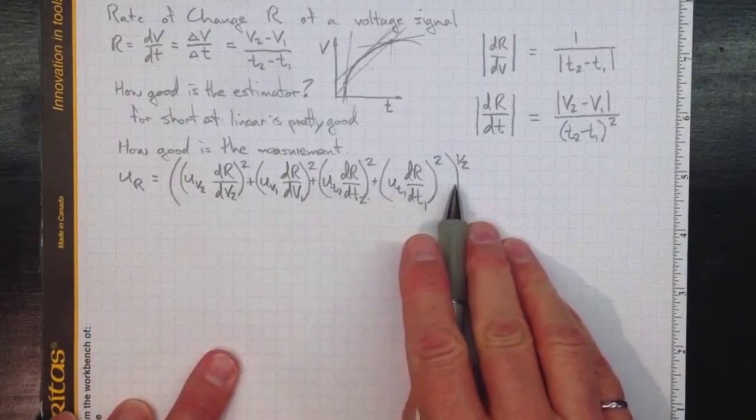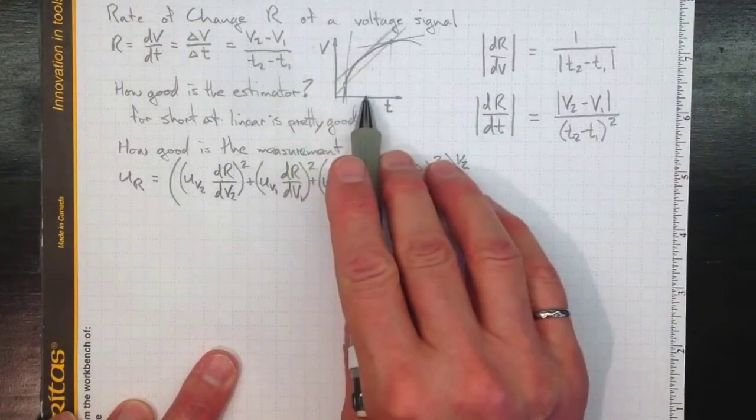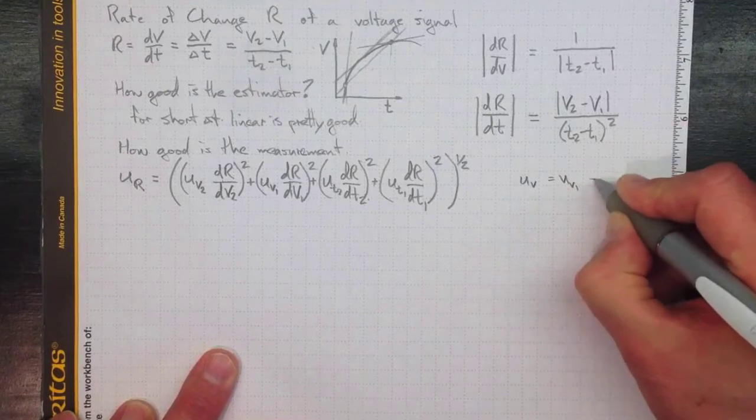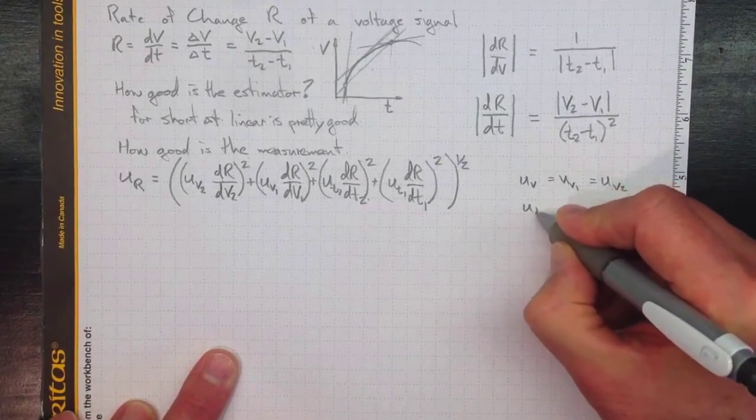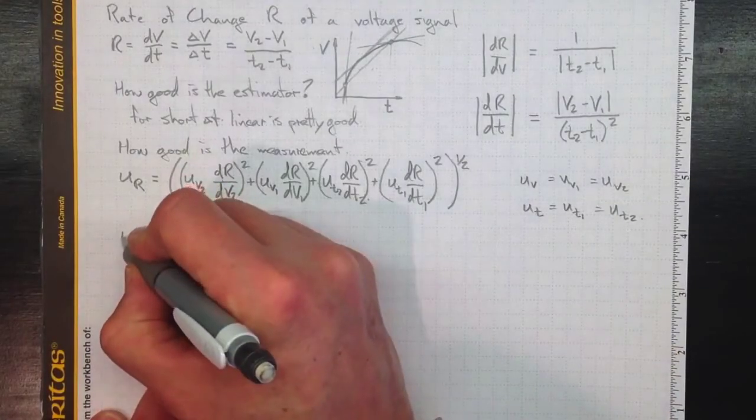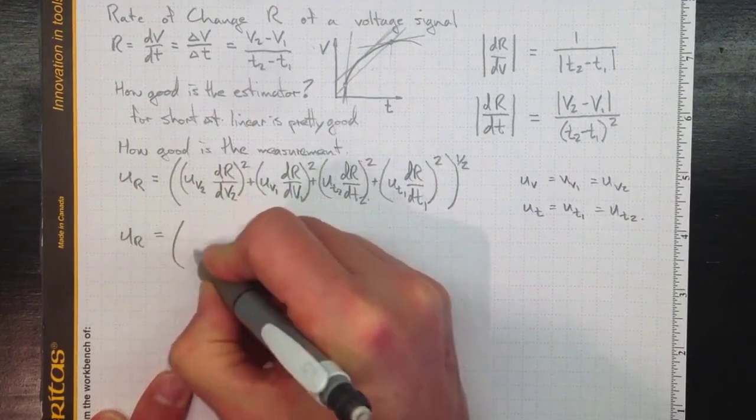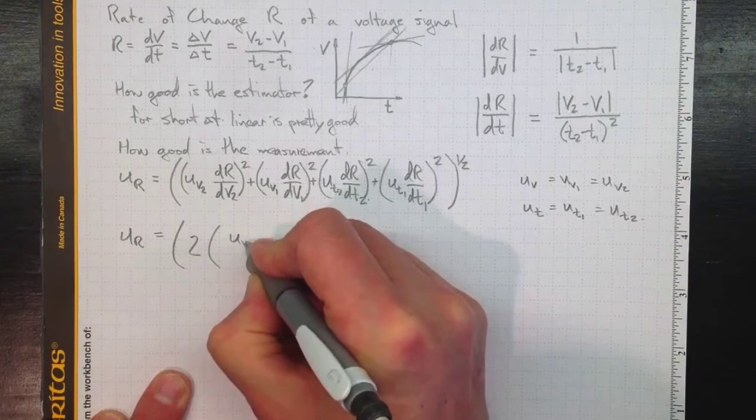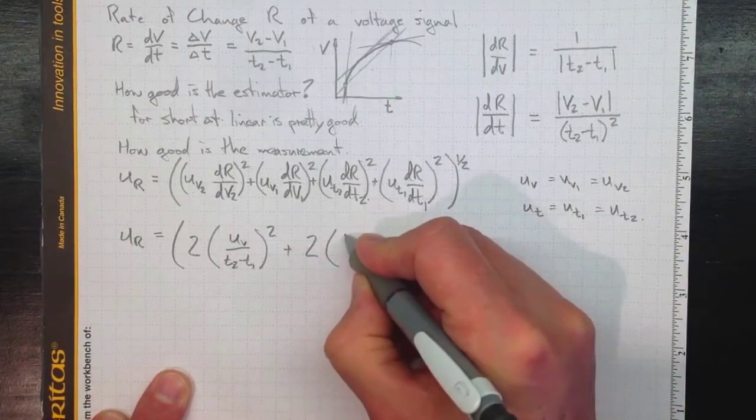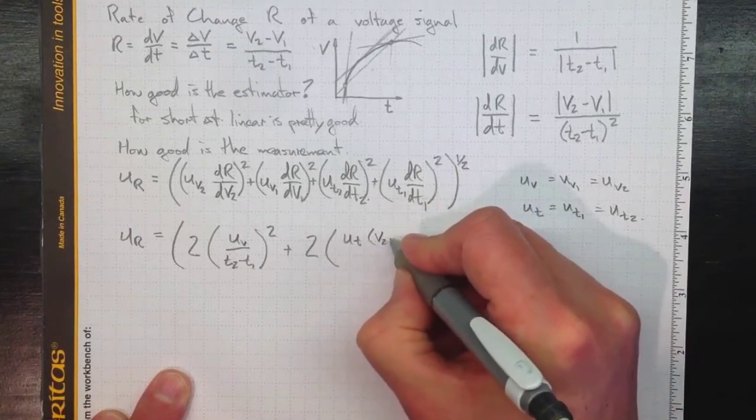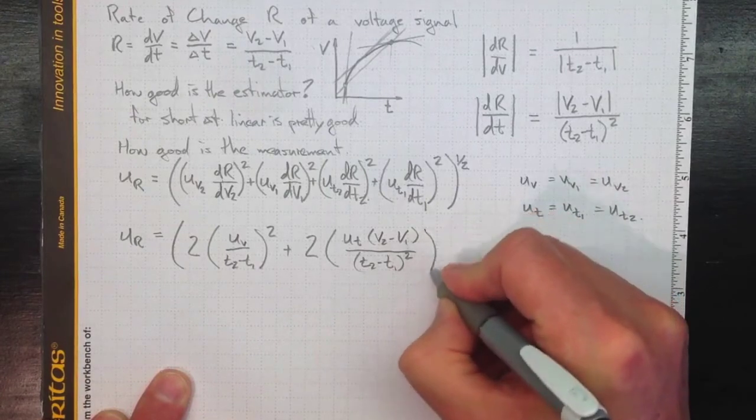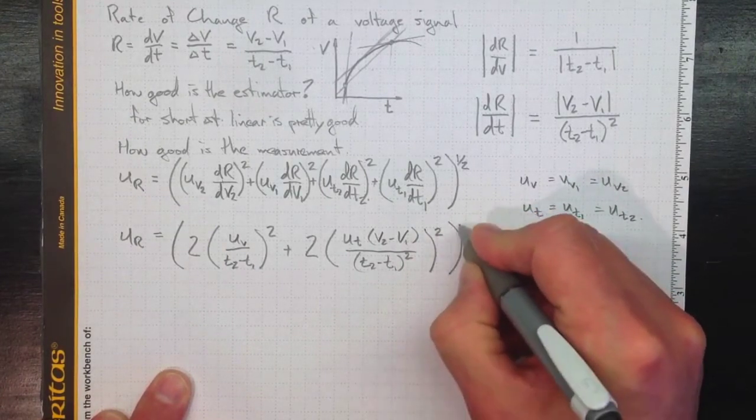So if we've got this uncertainty in our result, and we're making the voltage measurement with the same voltage device and the time measurement with the same time base, then the uncertainty in the voltage will be the same whether we're looking at V1 or V2, and the uncertainty in time will be the same whether we're looking at the uncertainty in time T1 or T2. Plugging that in, we get UR equal to 2 times UV over T2 minus T1 squared, plus 2 times UT times V2 minus V1 over T2 minus T1 squared, all of that squared, and then the whole collection square root.